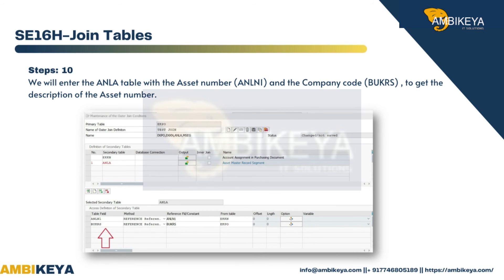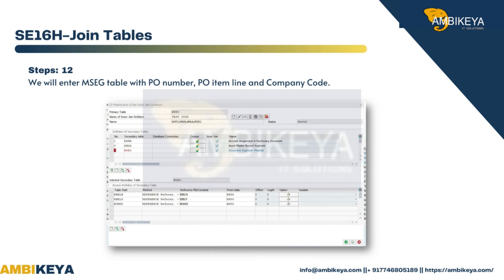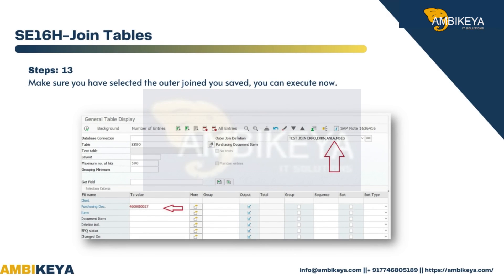Step 11: We will add a new join table MSEG to get the material document numbers and the movement type. Step 12: We will enter the MSEG table with PO number, PO item line, and company code. Hint: Make sure of the sequence number for the join tables before saving.